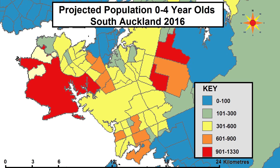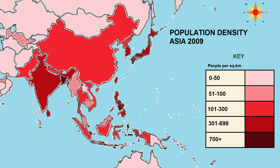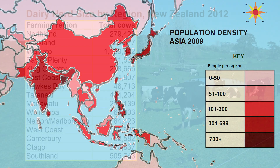Today I'm going to show you how to make a choropleth map. A choropleth map is a way of displaying statistical data on a map, for instance population data.